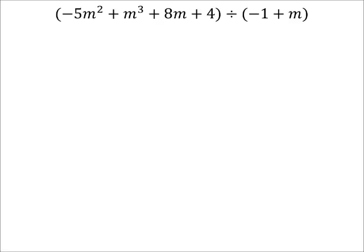This one's the same as the last one. From the dividend, all of these terms are out of order because we need these in descending degree of order. And then also our divisor there is kind of out of order as well.